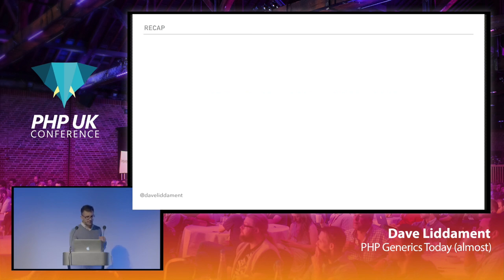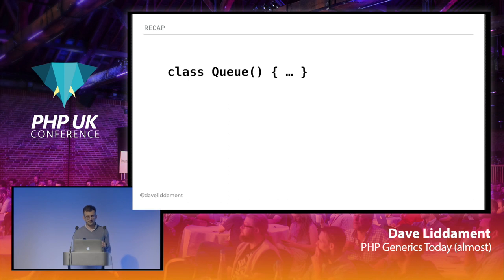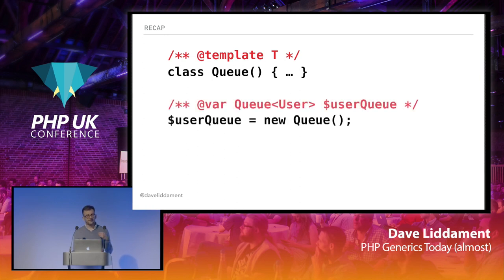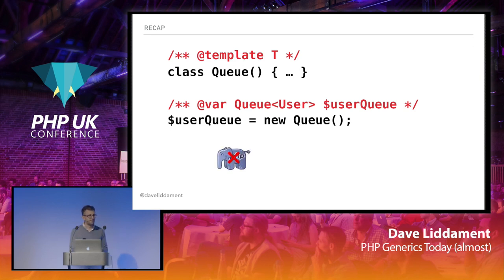Let's recap. Sometimes we write code for objects like Queue where at the time we write it, we don't know what type of data it will hold. We can tell static analyzers about this later using the @template annotation. When we create our queue, we give the static analyzer the information it needs, again in the annotation. Unfortunately this isn't supported by PHP at the moment, so instead we use tools like Psalm and PHPStan to validate that everything is correct.